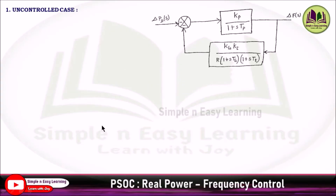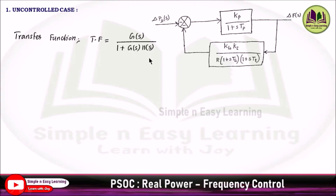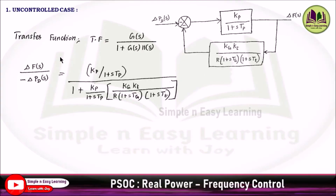We find the transfer function as G(s) divided by 1 plus G(s)·H(s), where G(s) = KP / (1 + sTP) and H(s) is the whole feedback block. The transfer function is defined as the Laplace transform of output divided by Laplace transform of input. Here the output is ΔF(s) and the input is ΔPD(s), which enters at the negative, so it is −ΔPD(s).